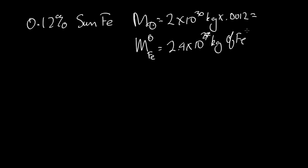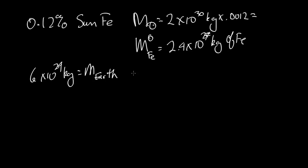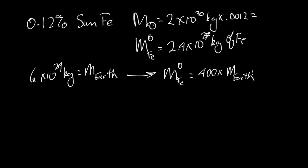Compare that to 6×10²⁴ kilograms, which is equal to the mass of the Earth. We can see that the amount of iron in the Sun is equal to about 400 times the mass of the Earth. So there's a lot of iron there.